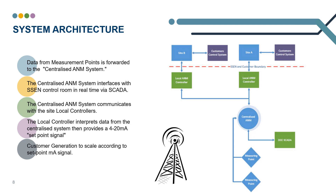Now I'm going to talk about how we get this information from the measurement points to the generators. The measurement points are fitted with communications equipment, and this data is forwarded to our cloud based centralised A&M system. The centralised A&M system interfaces with our control room in real time via SCADA and also communicates to the local controllers that are based on site. These local controllers on each individual site interpret the data from the centralised system and then provide a 4 to 20 milliamp set point signal which is sent to the individual site. The customer generation should then be capable of scaling according to this milliamp signal.